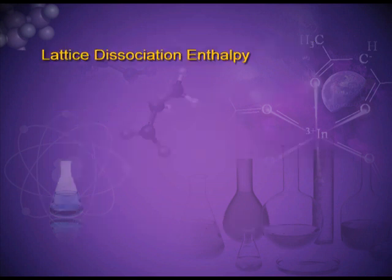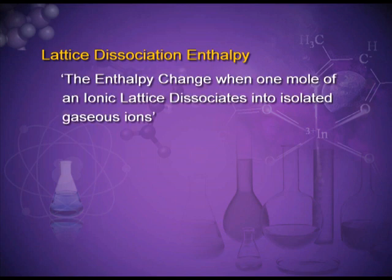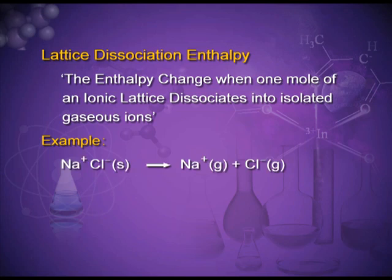The second definition is lattice dissociation enthalpy: the enthalpy change when one mole of an ionic lattice dissociates into isolated gaseous ions. For example, sodium chloride crystal in the solid state dissociates into sodium ion in the gaseous state and chloride ion in the gaseous state. The ionic solids are crystalline solids with long range order and there are strong ionic bonds between the oppositely charged ions, that is cation and anion.